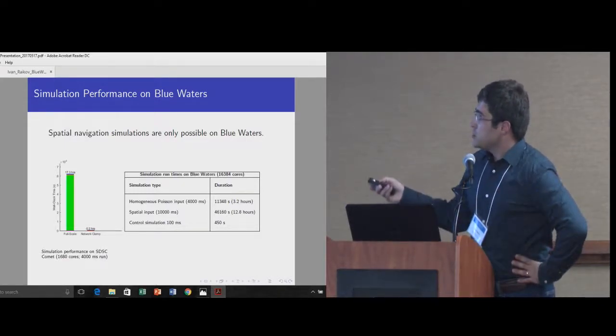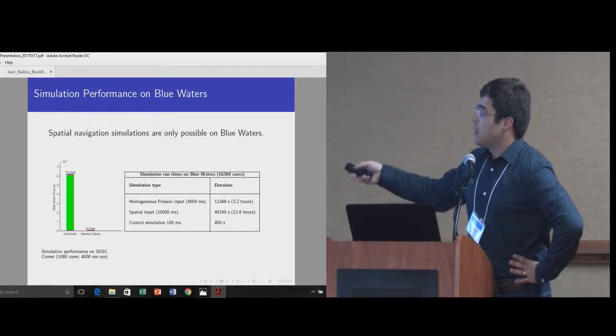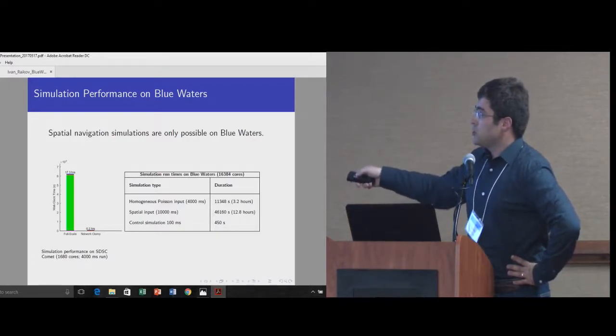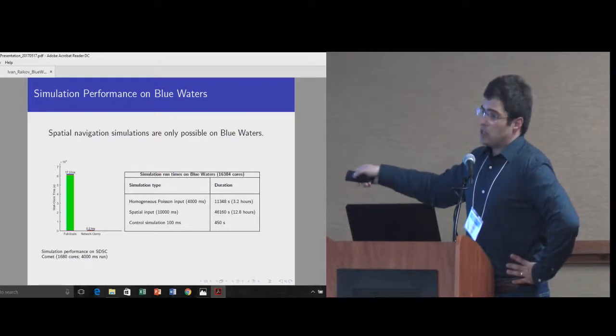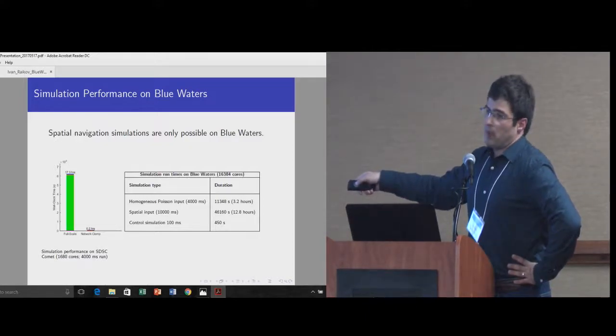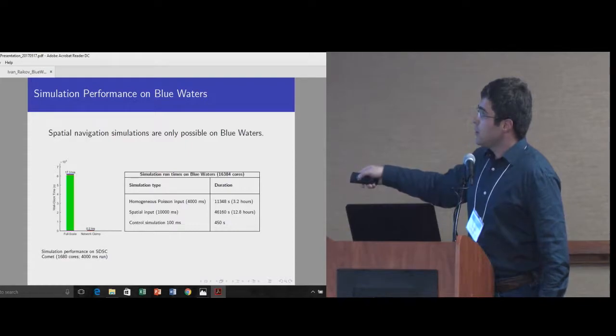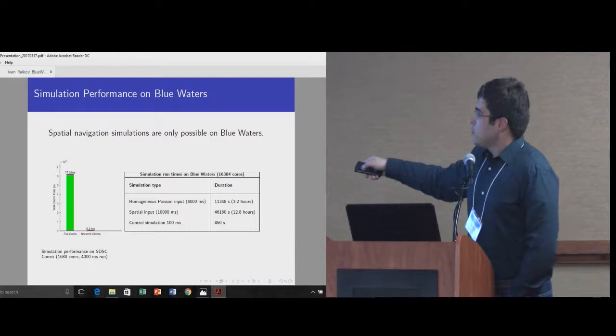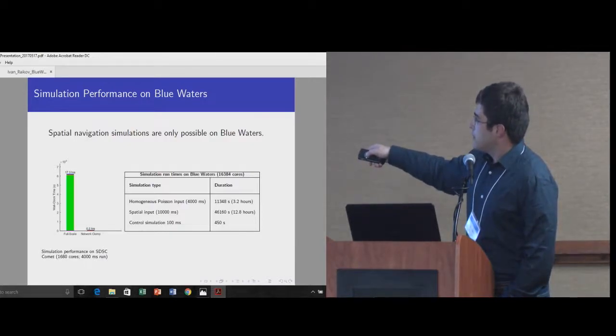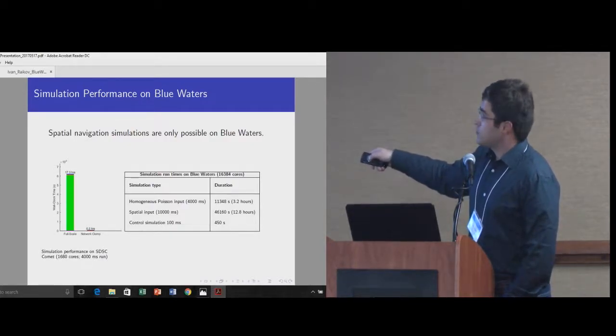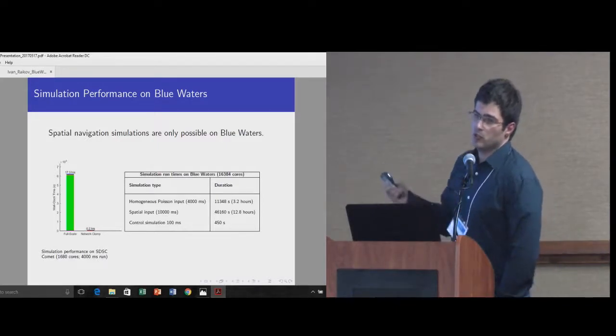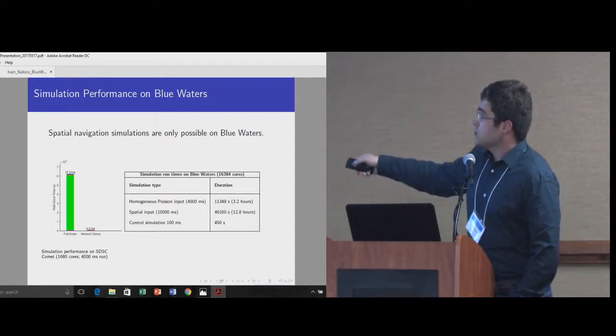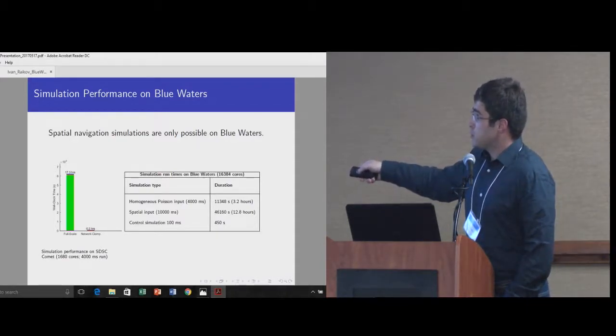Just a couple of words about simulation performance and Blue Waters. Before we got our Blue Waters allocation, we were using Comet in San Diego. It was taking about 17 hours using the maximum allowed number of nodes, 1680 cores, I believe. With Blue Waters, it actually takes about three hours for the same simulation and of course 16,000 cores, which is, it's a large allocation, but it's not so many for Blue Waters. So this has really significantly improved our workflow.